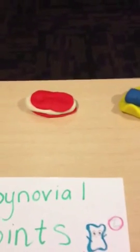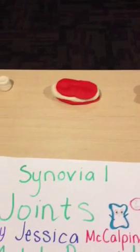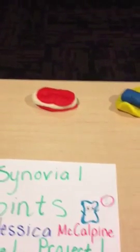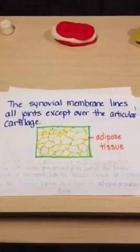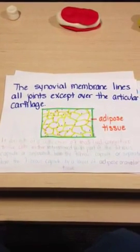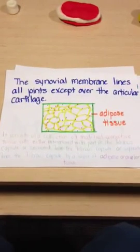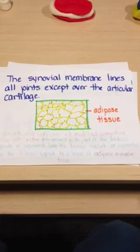Synovial joints allow considerable movement between articulating bones. The articular surfaces of bones within synovial joints are covered with a thin layer of hyaline cartilage called articular cartilage. The synovial membrane lines all joints except over the articular cartilage. It consists of a collection of modified connective tissue cells either intermixed with part of a fibrous capsule or separated by a layer of adipose or areolar tissue.